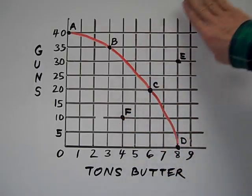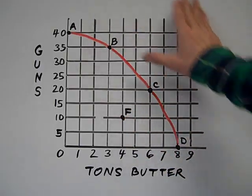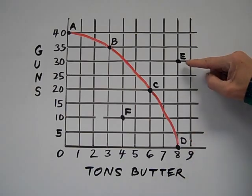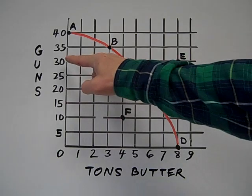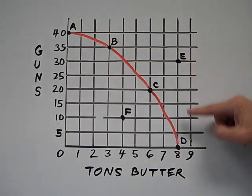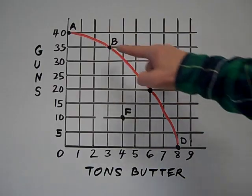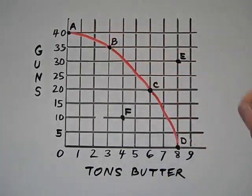What's not possible is to be beyond this red curve. They can't do it. They don't have enough energy or time or men or women or steel or cows or grass or whatever, to produce 30 guns a day and eight tons of butter a day. They can't be at E. They can be at C or B or A or anywhere else on this line, but not E.